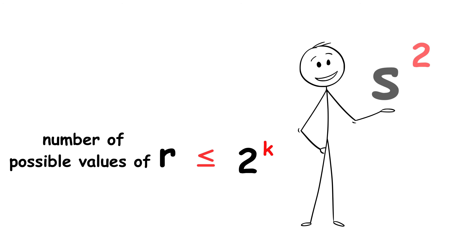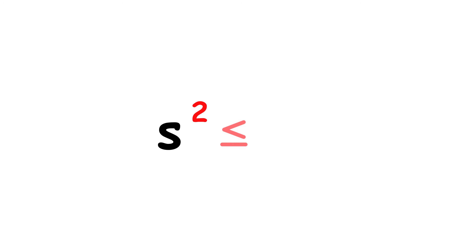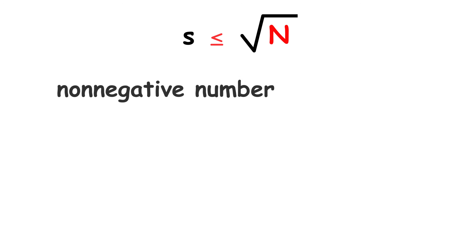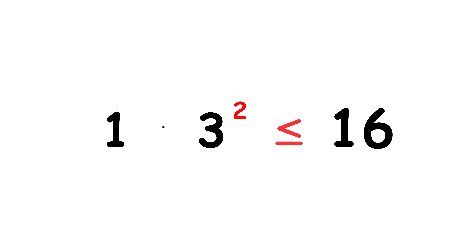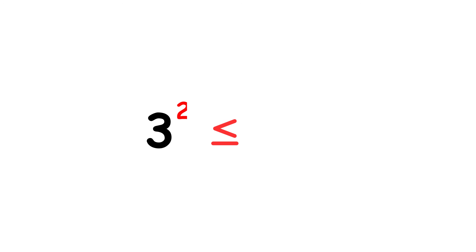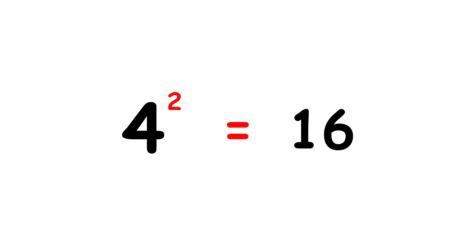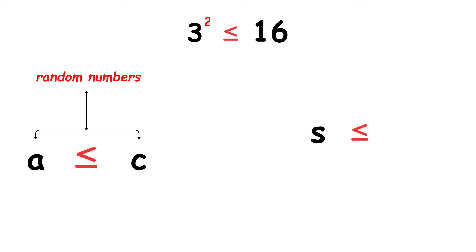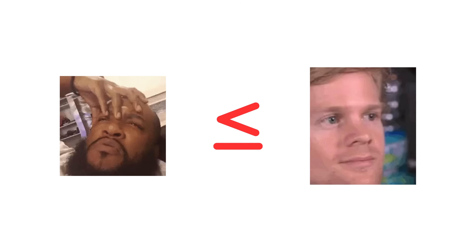Generally, if there are K prime numbers less than or equal to N, then the number of possible subsets is equal to 2 to the power of K. The number of possible values of R must be less than or equal to 2 to the power of K. Next, we'll focus on the S squared part. Remember that R times S squared has to be less than or equal to N, so S squared also has to be less than or equal to N. Because of this, S has to be less than or equal to the square root of N — that is, the non-negative number that, when squared, gives you N. Using an earlier example, we had that 1 times 3 squared is less than or equal to 16, so 3 squared by itself is less than or equal to 16. The square root of 16 is equal to 4 because 4 squared equals 16. Plugging the numbers into the inequality, S is less than or equal to the square root of N — we get 3 is less than or equal to 4, which is true.